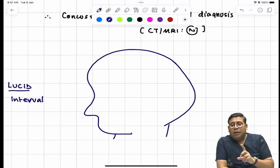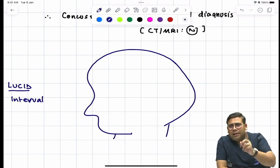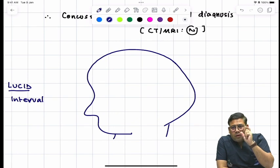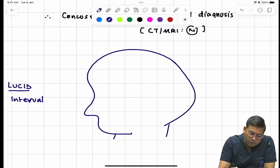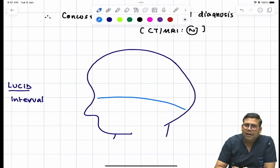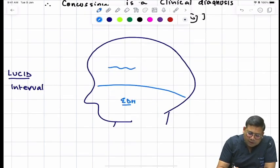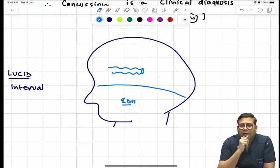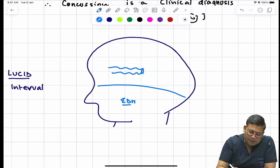But dear students, what is the cause behind this? Ninety percent of students don't know. Let me explain it to you. From today you shall have a totally different concept about EDH. When we talk about EDH, what is the reason? The major injury is traumatic rupture of the middle meningeal artery.